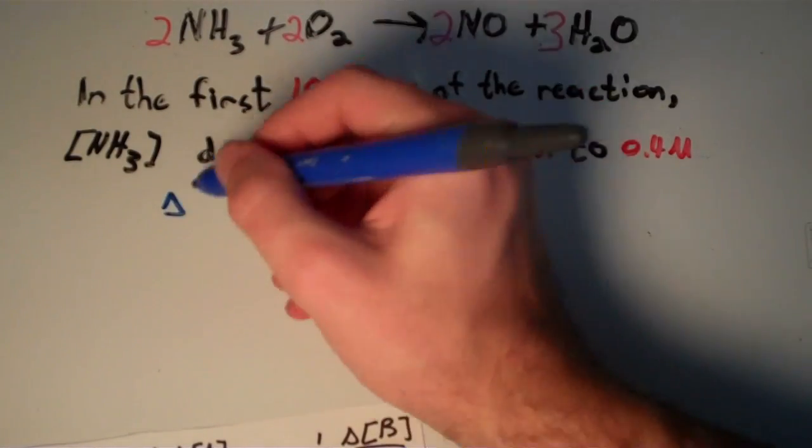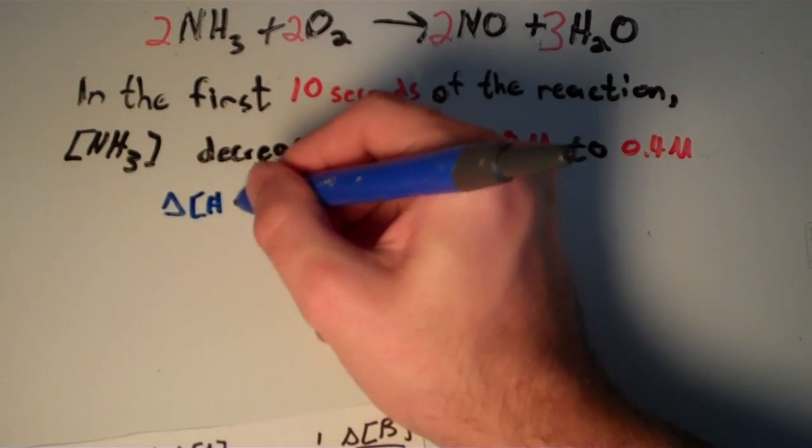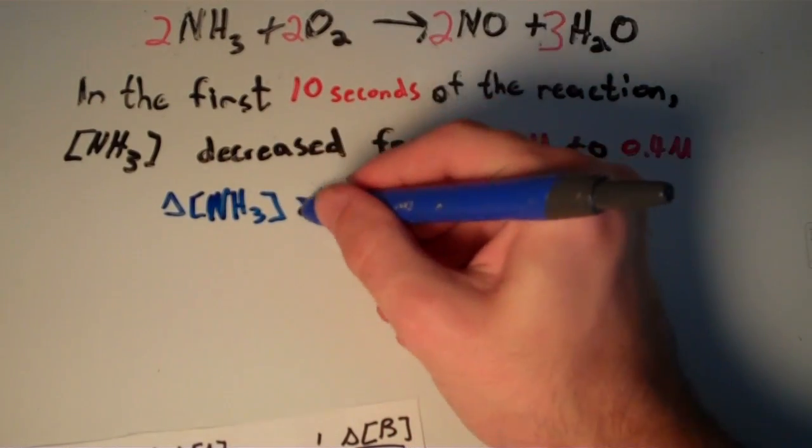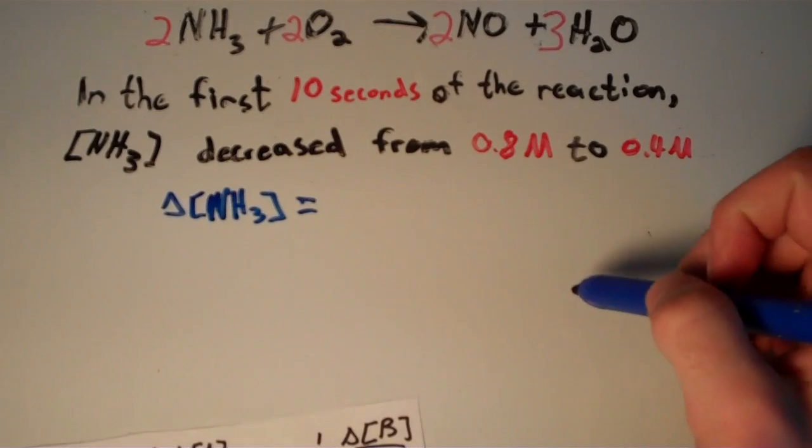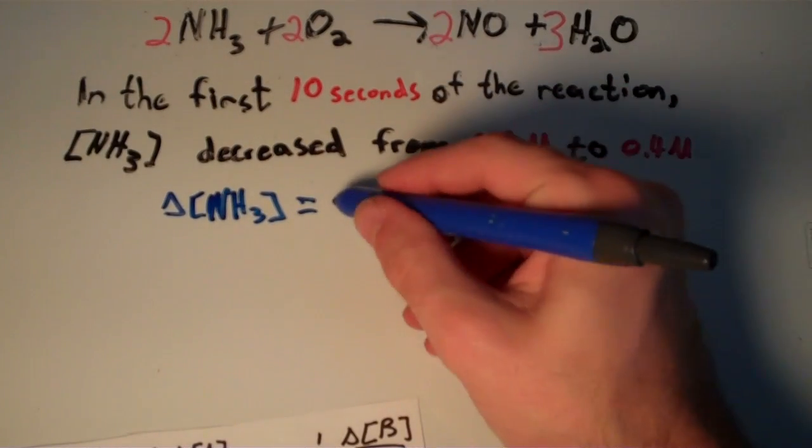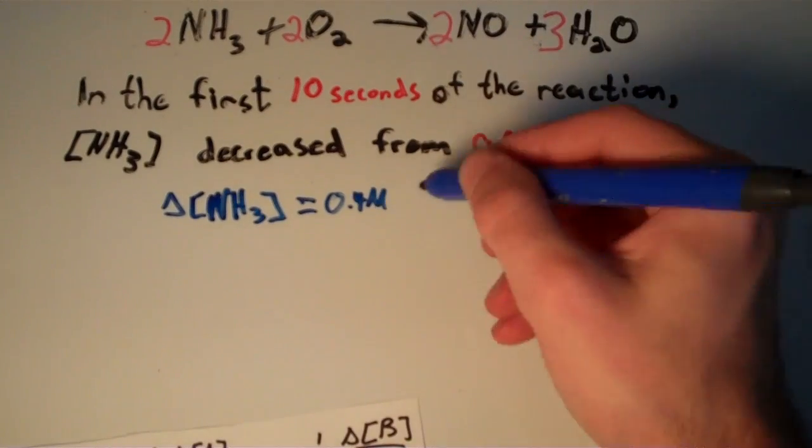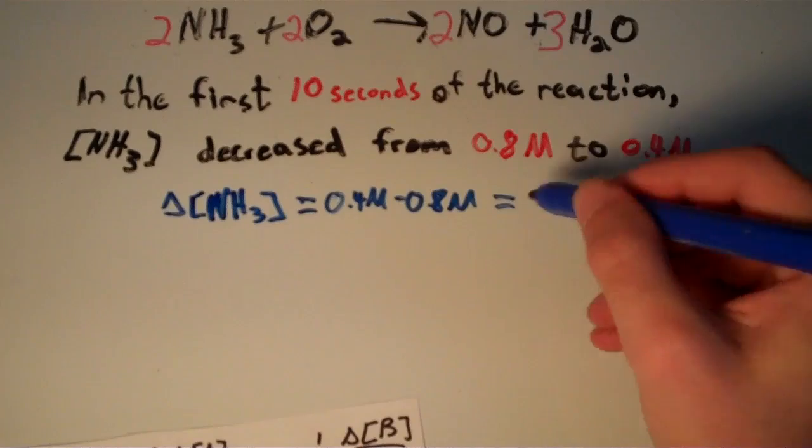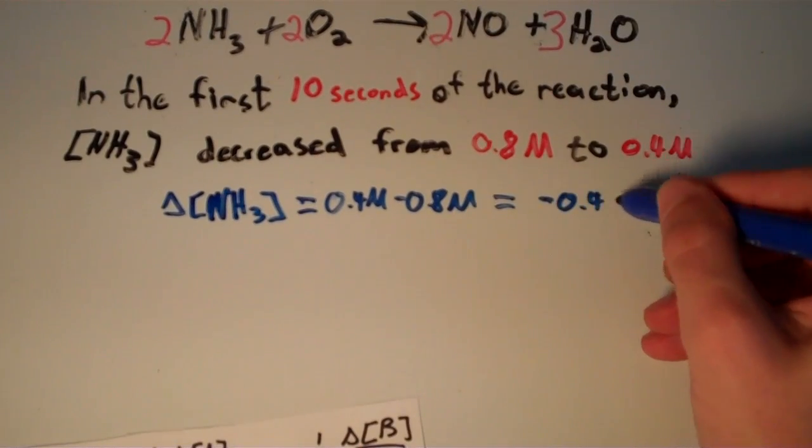So the change in the concentration of NH3, that's just going to be the final concentration minus the initial concentration. So that's just going to be 0.4 molar minus 0.8 molar, which is equal to negative 0.4 molar.